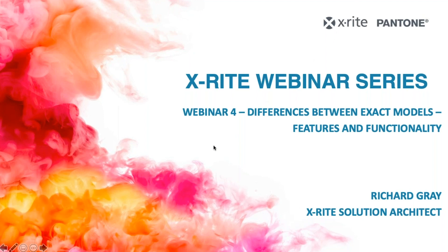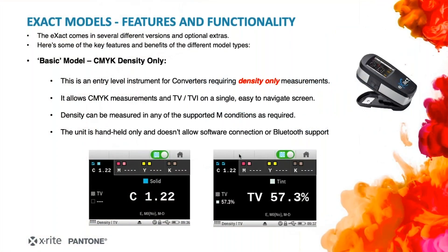Welcome to the fourth and final exact webinar series of our short and sweet webinar format. This topic, we're going to be discussing the differences between the different exact models available — some differences in features and functionality, and a little bit of explanation around some other topics that we covered briefly in previous webinars. The exact comes in several different versions and also has optional extras. Some of you will be familiar with some of this functionality already. So we're going to run through some of the key benefits and features of some of the different models.